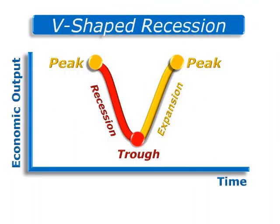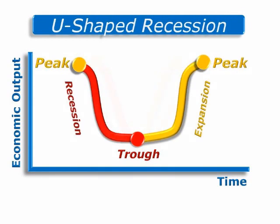Not all recessions are the same. Some begin abruptly, reach a trough quickly, and then recover quickly — this is called a V-shaped recession. Sometimes we have a U-shaped recession when the slowdown lingers and it takes a long time for activity to pick up again.